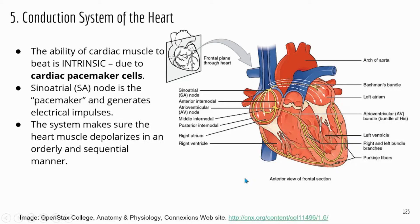Now let's look at the conduction system of the heart. If you remember from the neuromuscular system, when neurons communicate with one another or when motor neurons control muscle cells, they all utilize electrical signals — electrical impulses. The same thing applies here: for cardiac muscles to contract, they need to receive electrical signals or electrical impulses.